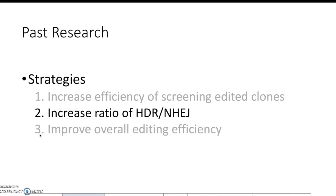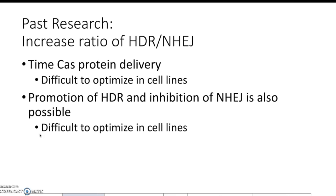Next are strategies to increase the ratio of homology-directed repair to non-homologous end joining. One approach is to time your Cas9 protein delivery — depending on what stage of cell division the cells are in, you can insert your Cas9 at a time that optimizes HDR efficiency. However, since there are many different cells, this is extremely difficult to optimize across cell lines. You can also try to introduce factors that promote HDR or inhibit NHEJ, but similarly, it is very difficult to optimize across all cell lines.